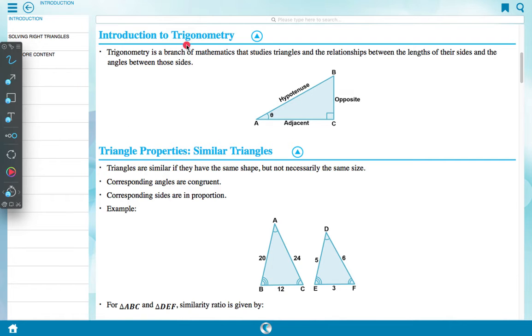Introduction to trigonometry. Trigonometry is a branch of mathematics that studies triangles and the relationships between the lengths of their sides and the angles between those sides. Here given us figure, triangle figure ABC. Here AB is hypotenuse and angle BAC is theta. This is adjacent. This is 90 degrees and this is opposite. Hypotenuse is always opposite to 90 degrees.